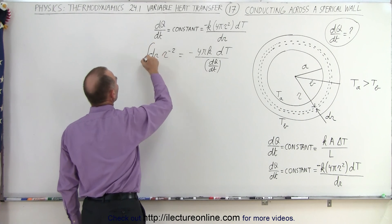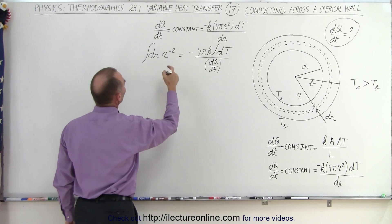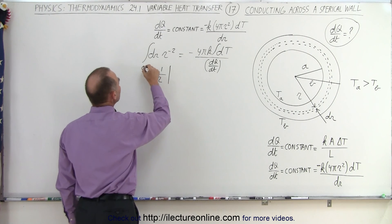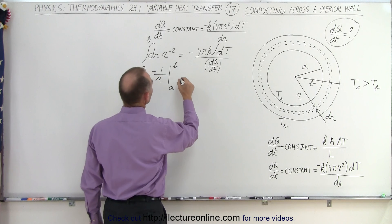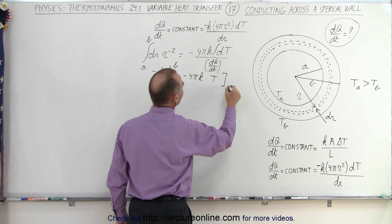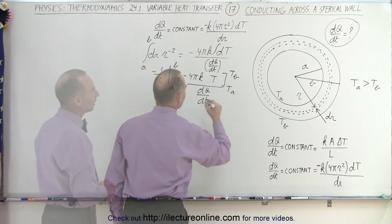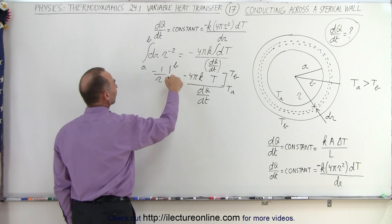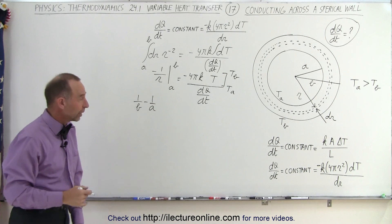Now we can integrate both sides. We can integrate the left side, we can integrate the right side. And so this becomes R to the negative 1 divided by negative 1, or minus 1 over R to the first power. And we're going to integrate this from A to B. The limits of integration are going to be from A to B, because the inner radius is A, the outer radius is B. And then here, this is equal to minus 4πK times T evaluated from T on the inside to T on the outside, all divided by dQ/dt. We have a negative here, negative there, they cancel out. So we have 1 over R from A to B. So that becomes 1 over B minus 1 over A.